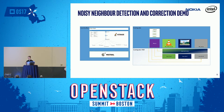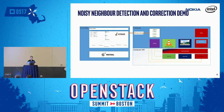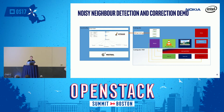We're going to monitor the last level cache utilization for each of those cores, leveraging CollectD and Intel RDT's user space library called LibPQoS. The two applications we're really interested in are the video server and the video client. We're going to showcase how the quality of the video will degrade when we run a stressful application, and how it comes back to normal once the corrective action takes place.